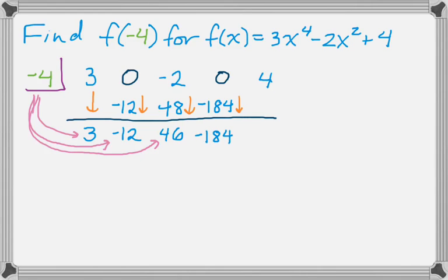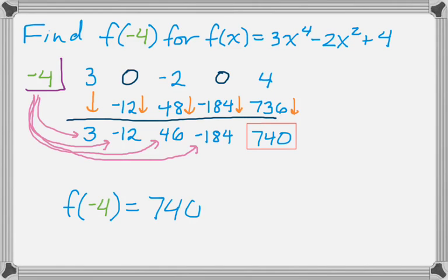I'm going to add down, get -184. And then multiply there to get 736. Add down, 740. So that's what I was looking for. So f(-4) is 740.